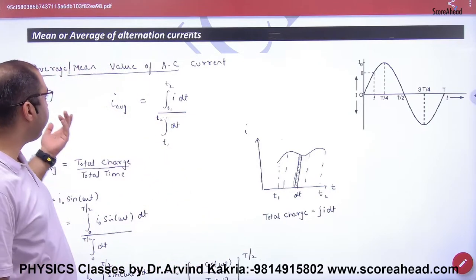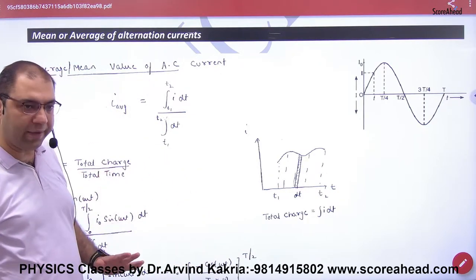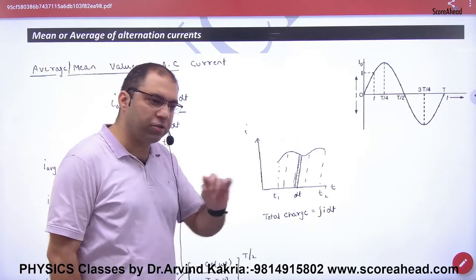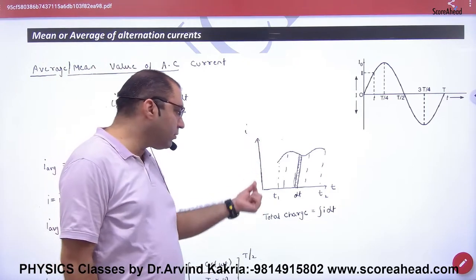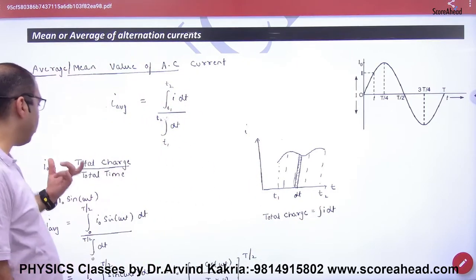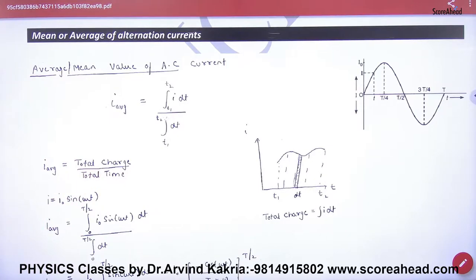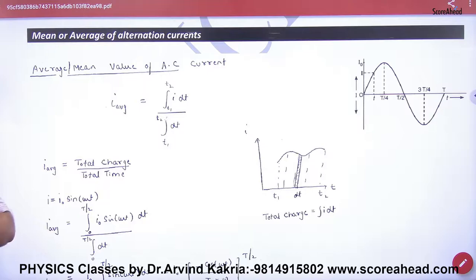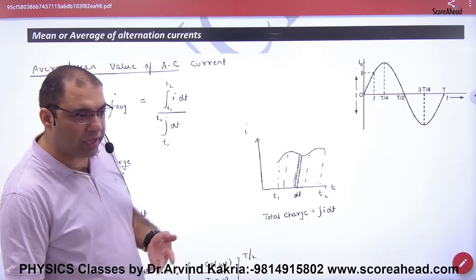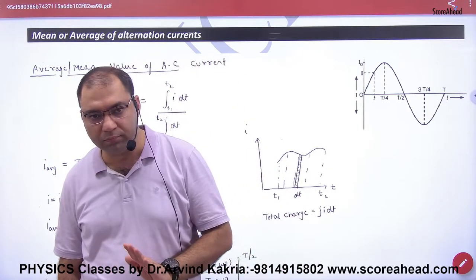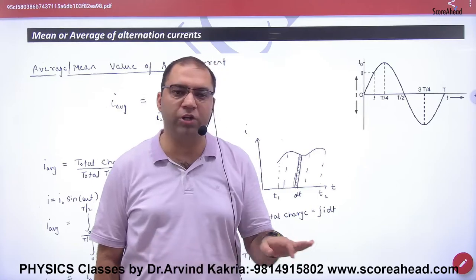So mean or average value of AC current, imagine that you have a diagram. This current waveform, current. This is I and T. So average current is the formula: total charge upon total time. How much charge passed and how much time passed.